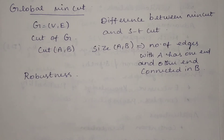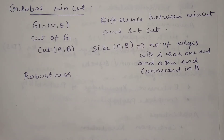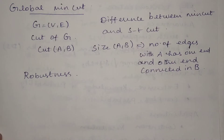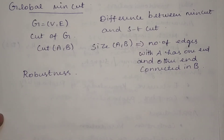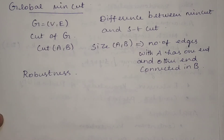In this video we will discuss another application of randomized algorithms, which is the global minimum cut problem. What is this problem? We already discussed one minimum cut problem in network flow algorithms. In that problem, we are given a directed graph, and we make one cut in the graph.